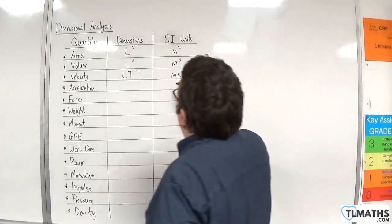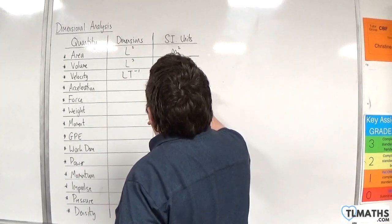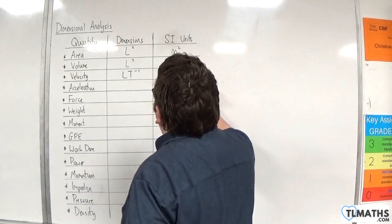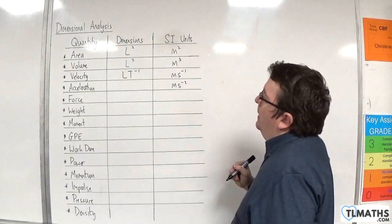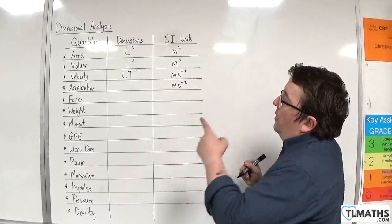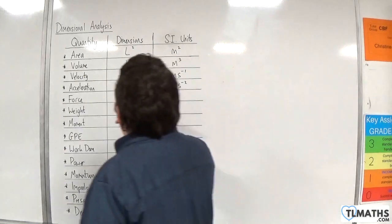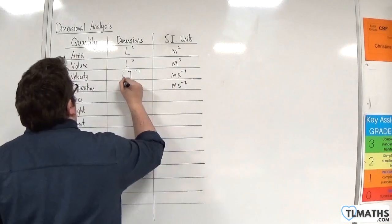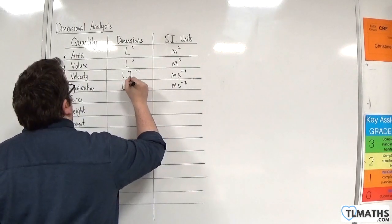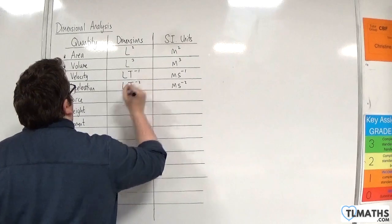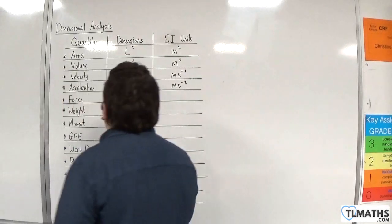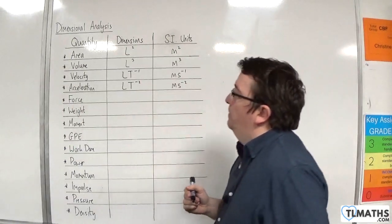Acceleration is metres per second per second. And so, the dimensions would be length times T to the minus two. So, L, T to the minus two.